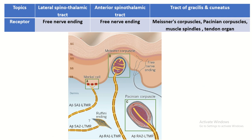The receptors related with the lateral and anterior spinothalamic tracts are the free nerve endings. The receptors related with the tract of gracilis and cuneatus are Meissner's corpuscle, Pacinian corpuscle, Ruffini endings, tendon organs, muscle spindles, etc.